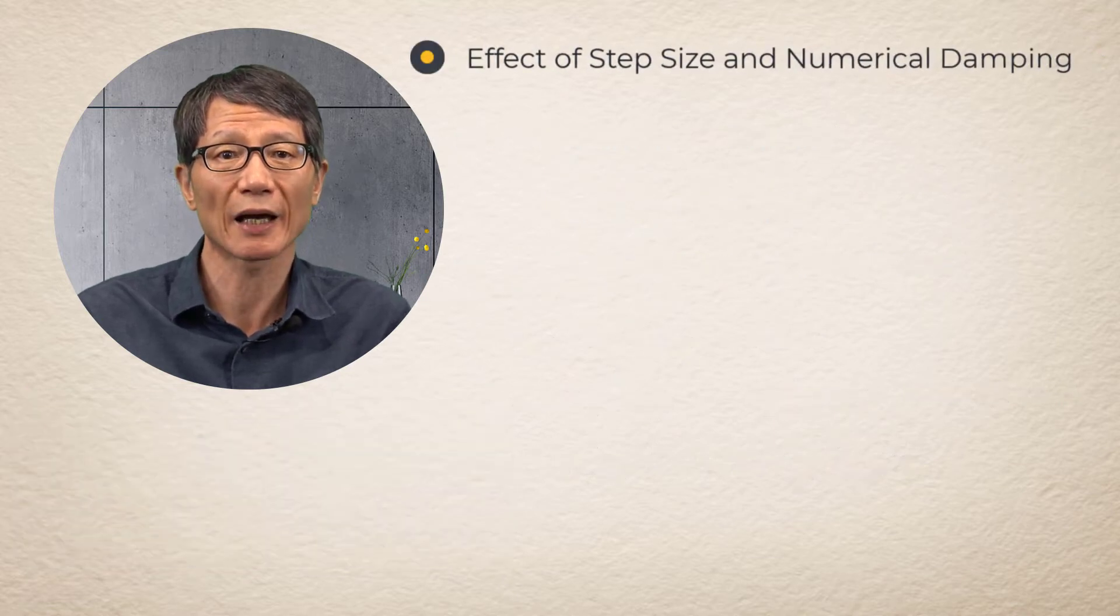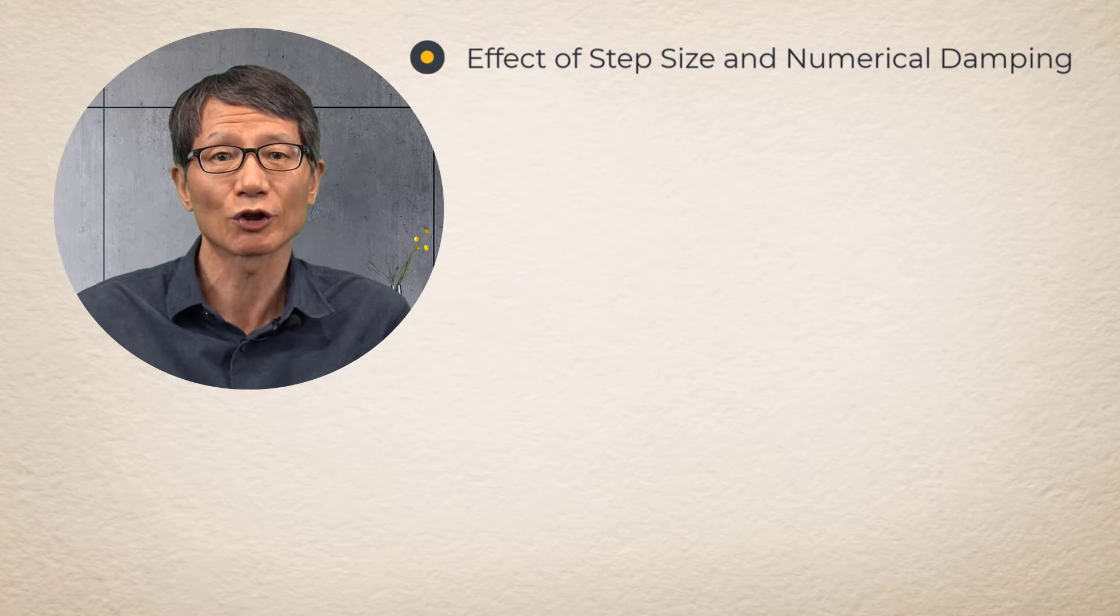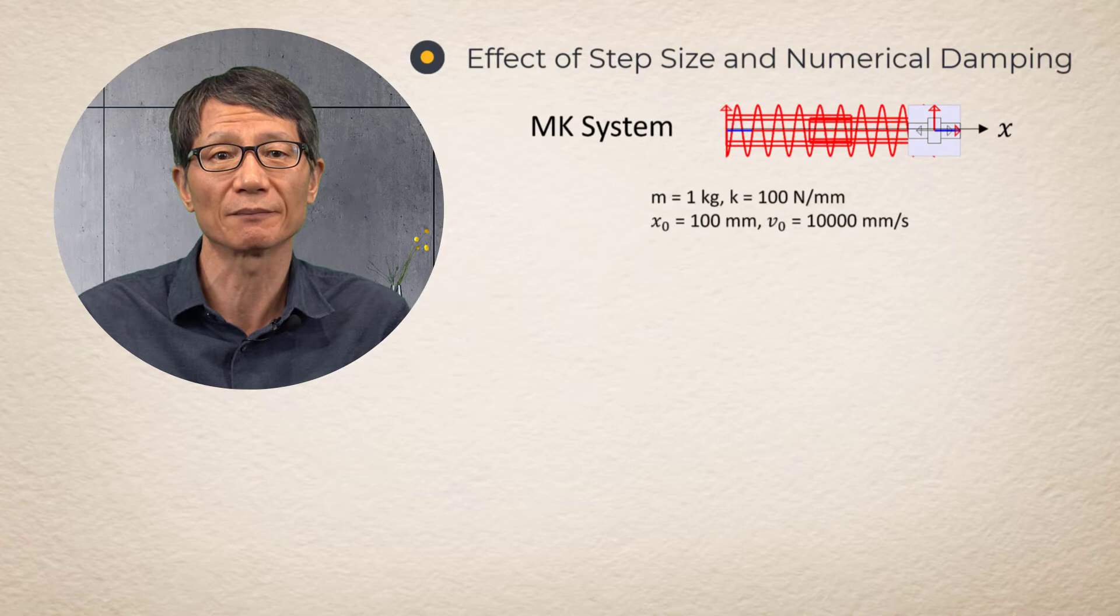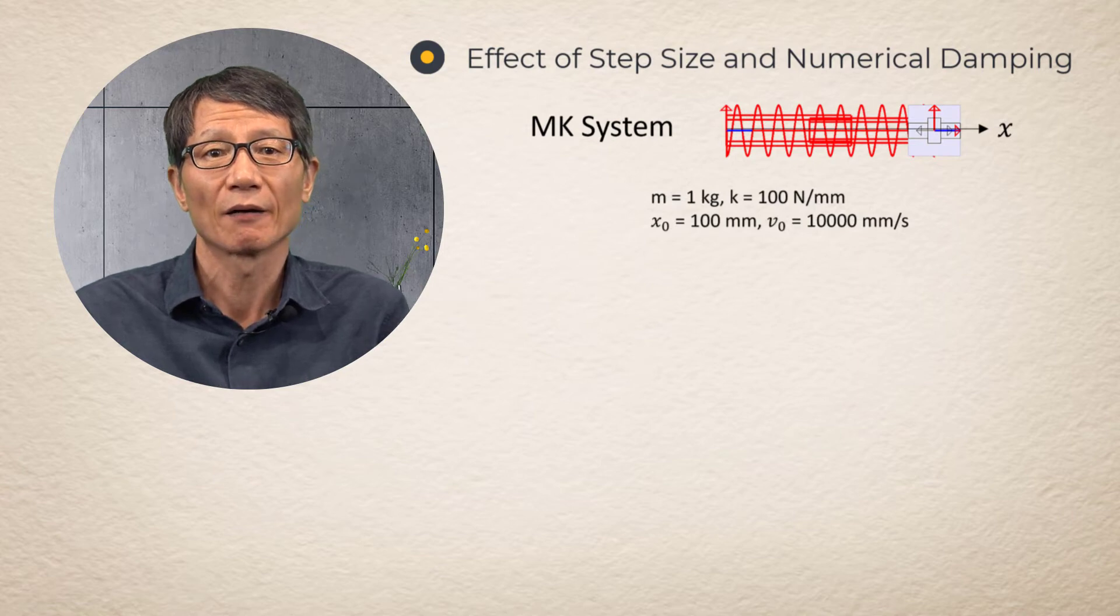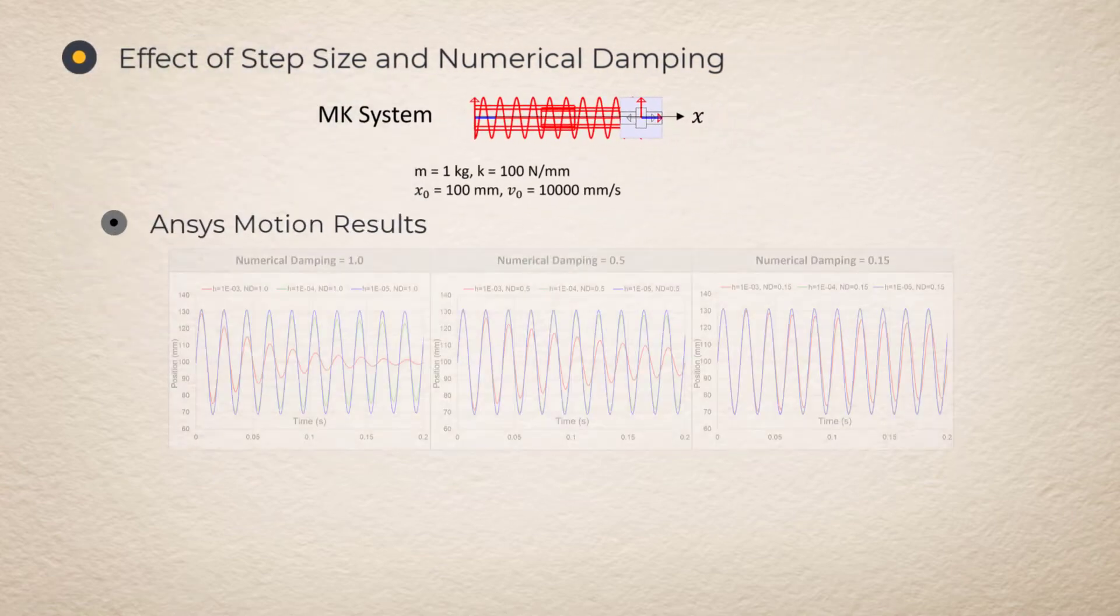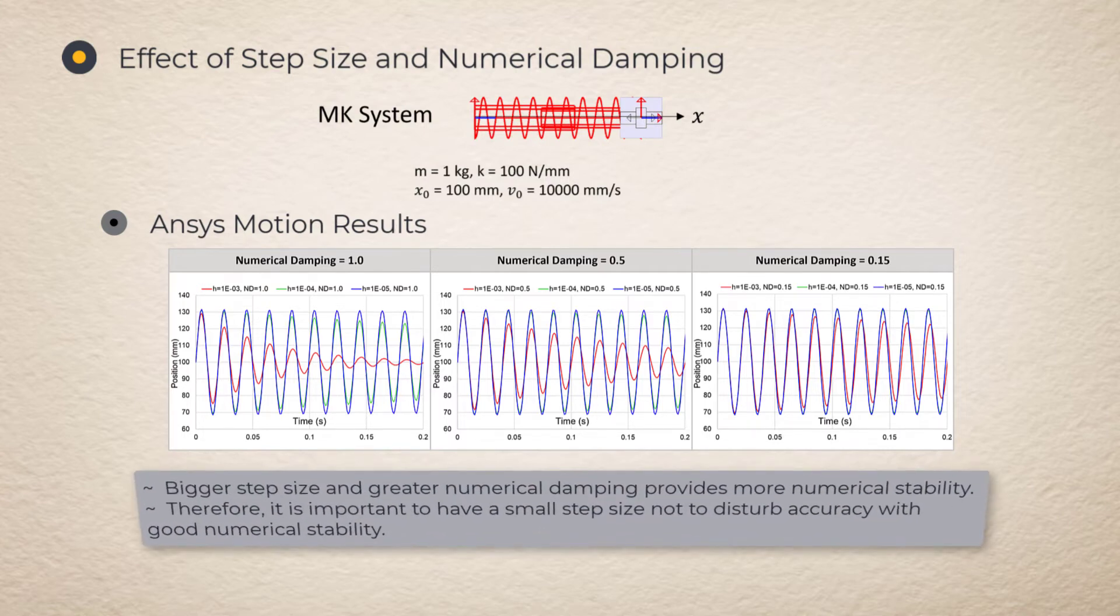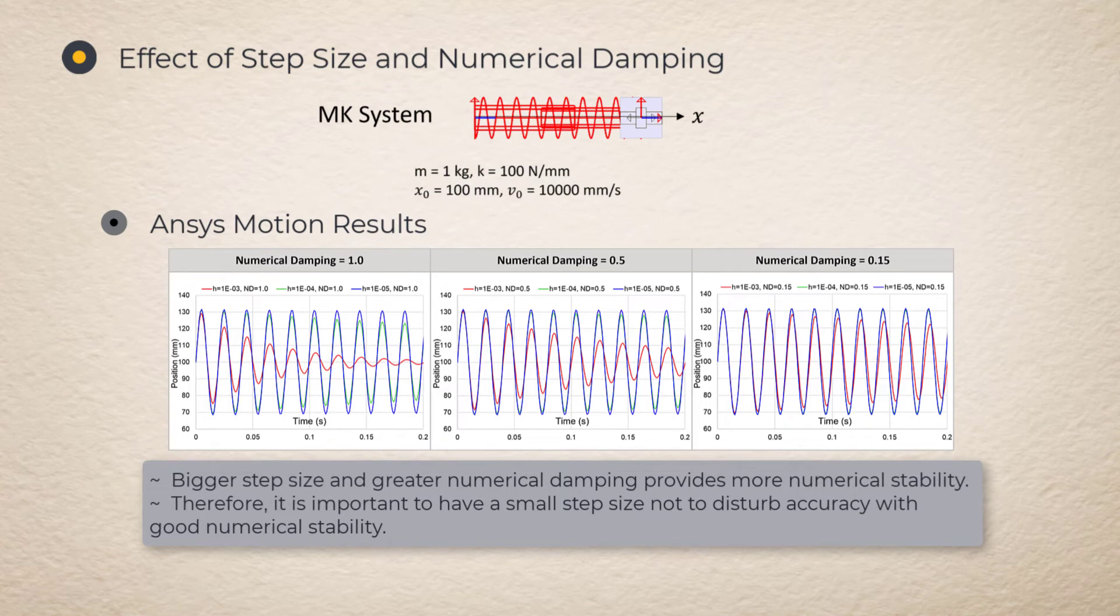Effect of Step Size and Numerical Damping. To show the effects of numerical damping and step size, let us take a look at the solutions obtained from ANSYS Motion for a simple one-body and spring system. The system has no physical damping. The response must oscillate without decaying. For maximum numerical damping of 1.0, it can be noted that the response oscillates without damping with the step size of 10^-6. As the step size increases, the more numerical damping effects can be observed.